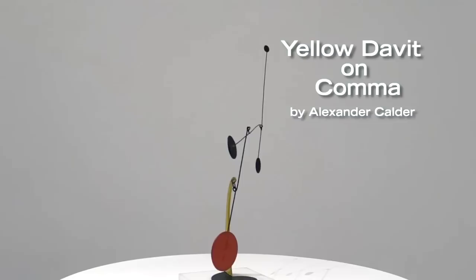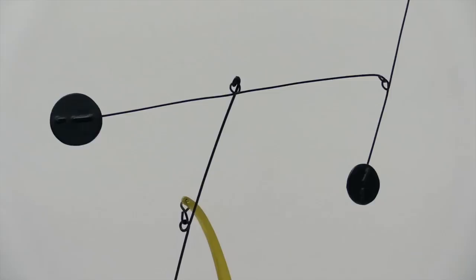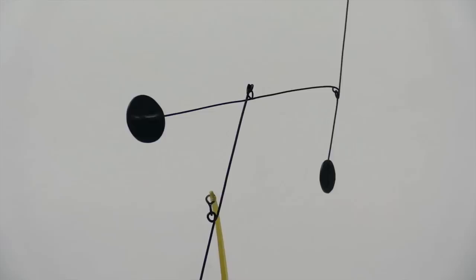Art history credits Calder for inventing kinetic sculpture. His style became iconic for its delicately balanced limbs and biomorphic elements that hang from rods and wires and move with the forces of nature.